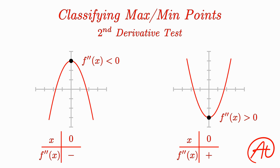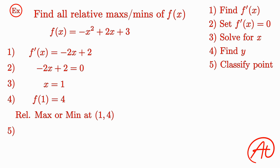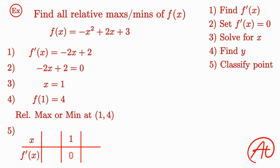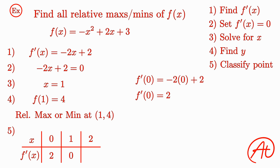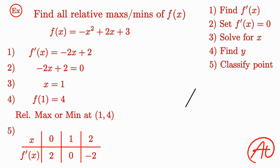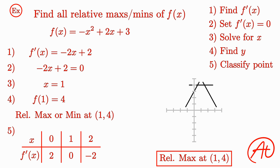Now that we know how to classify maxes and mins, let's return to our example. We found that our function has a relative max or min at (1, 4), and we'll classify it using the first derivative test. At x equals 1, the derivative is already equal to zero. For a point to the left, plugging in x equals 0 to the derivative gives a slope of positive 2. Then plugging in x equals 2 as a point to the right gives a slope of negative 2. Since the slope goes from positive to zero to negative, this must be a relative maximum. And by graphing our original function, we find the same thing.